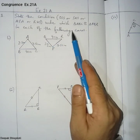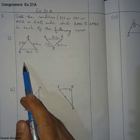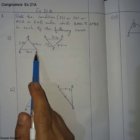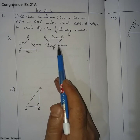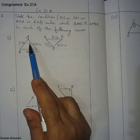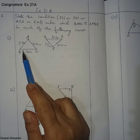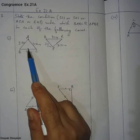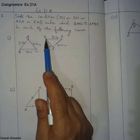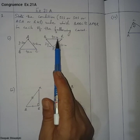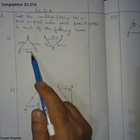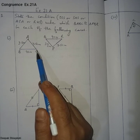In case number one, triangle ABC and triangle PQR are given. The length of PQ and AB is the same — 2.5 centimeters. The length of QR is 4 centimeters, and similarly BC is 4 centimeters. Corresponding sides are equal.